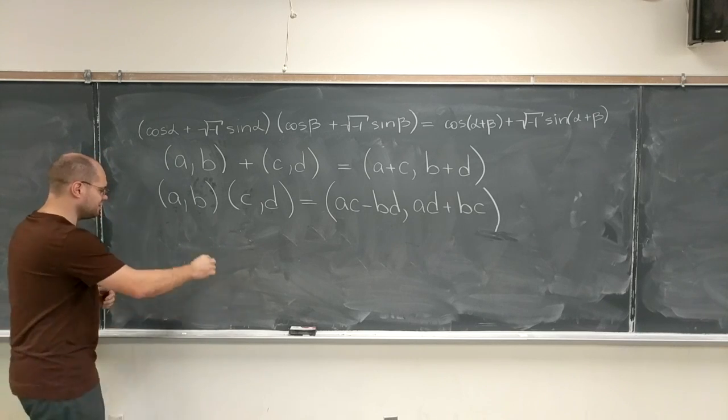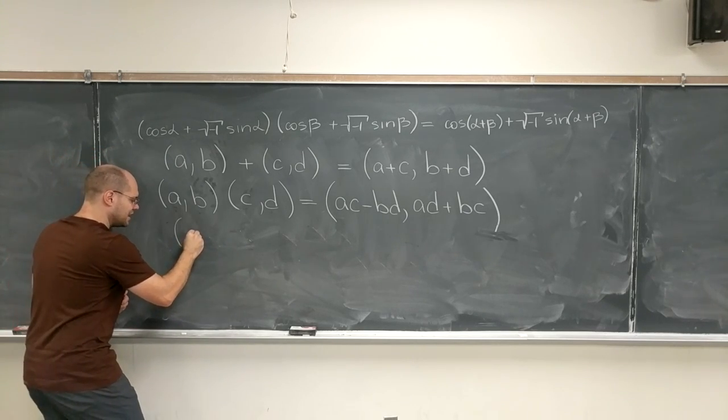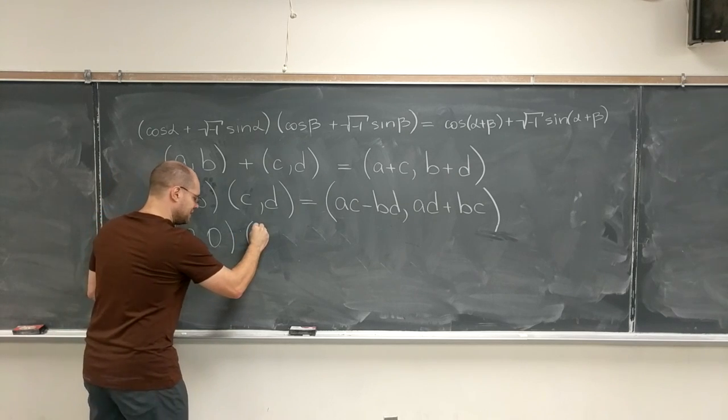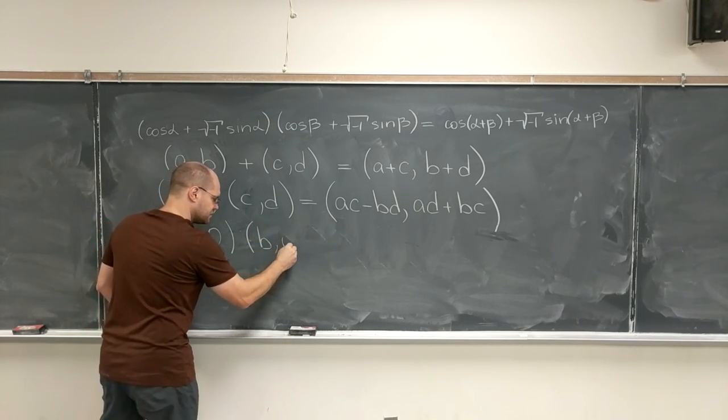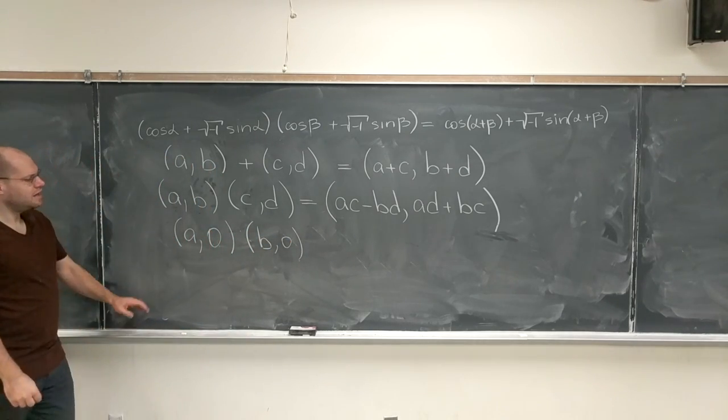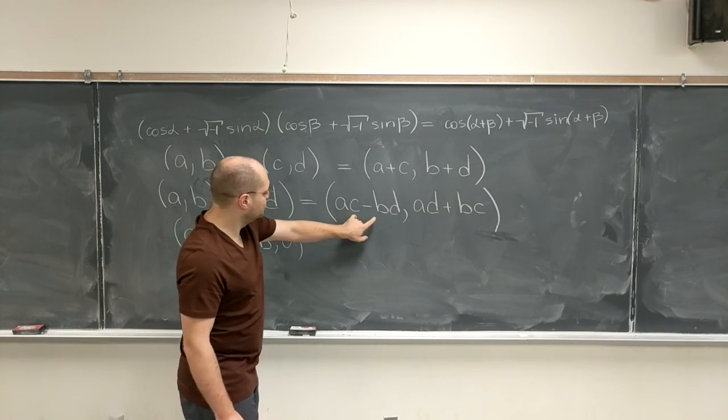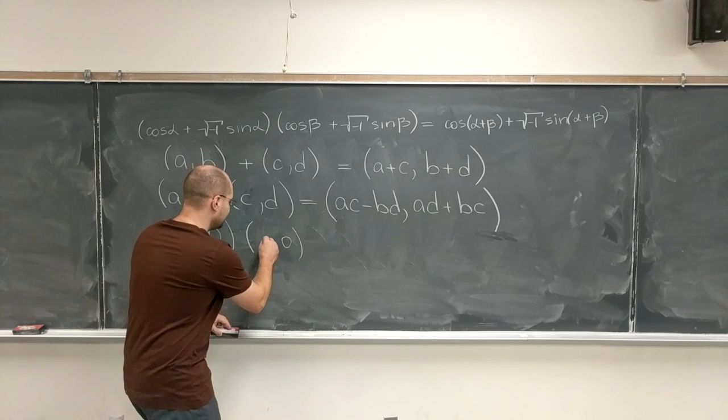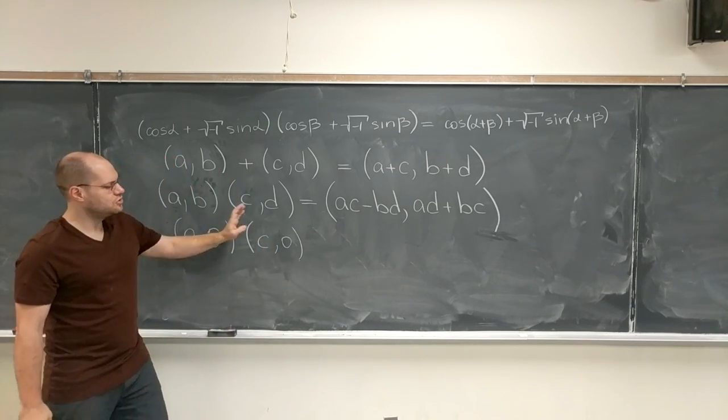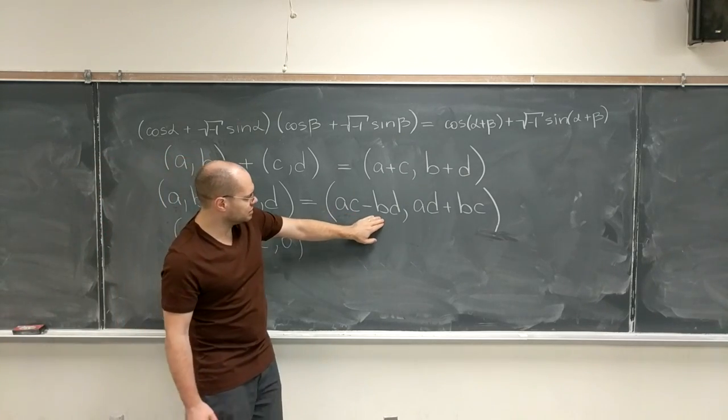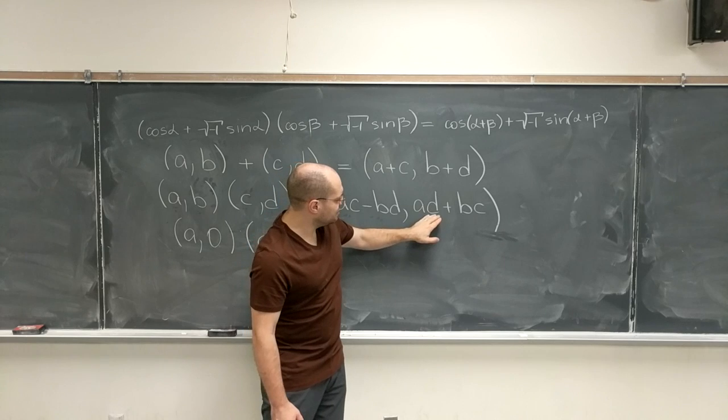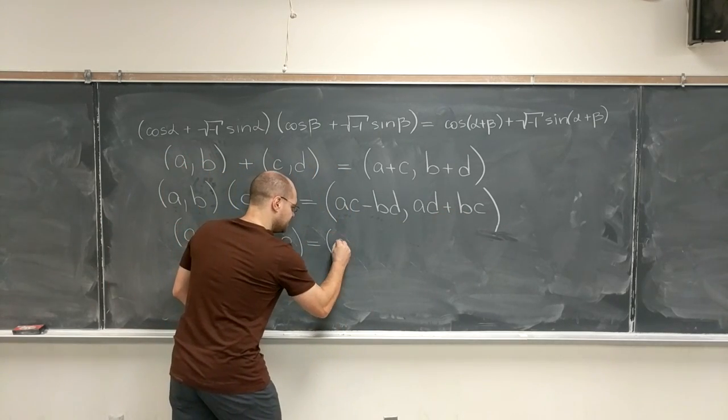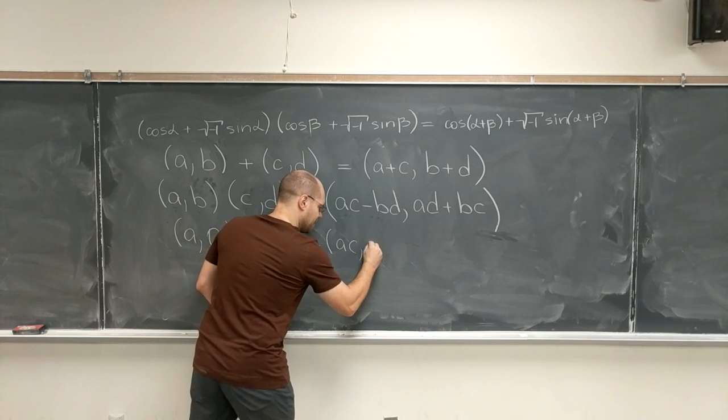And it also doesn't make it seem like real numbers are part of complex numbers. Except you need to realize that if you take a number of the kind (a, 0) and you multiply it by the number (c, 0) and you use this rule, you get (ac, 0).